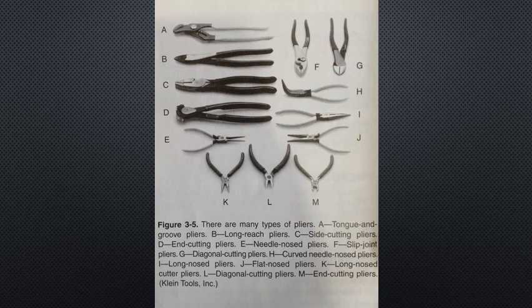Pliers: electricians use a variety of pliers to shape, bend, cut, and strip wire. There are many types of pliers, each suited for a particular set of tasks. Those types used by electrical workers are discussed below and illustrated in figure 3-5.